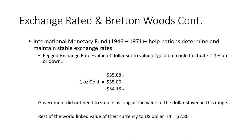The final building block from the Bretton Woods Conference was the International Monetary Fund. The International Monetary Fund is still around, and its goal is to help nations determine and maintain stable exchange rates. At the Bretton Woods Conference, John Maynard Keynes came and said he had a great idea for a new exchange rate system. People thought he was nuts and ignored him. The exchange rate system they came up with is what we call the pegged exchange rate, which went into effect in 1946.